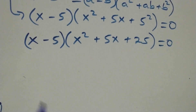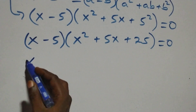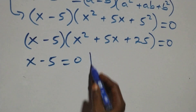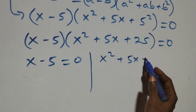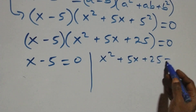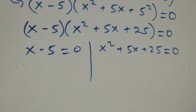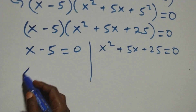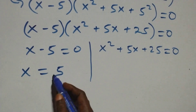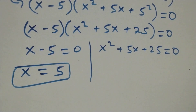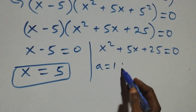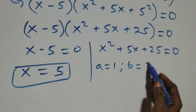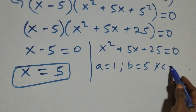We also have two possible cases here. The first term, x minus 5 equals to 0, or x squared plus 5x plus 25 equals to 0. Solving the first part, this becomes x equals to 5, which is a real solution. For the quadratic, a equals to 1, b equals to 5, and c equals to 25.